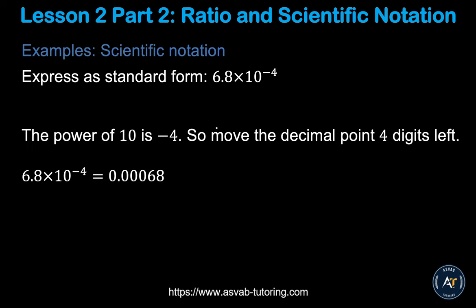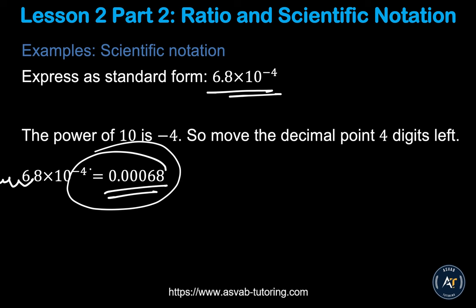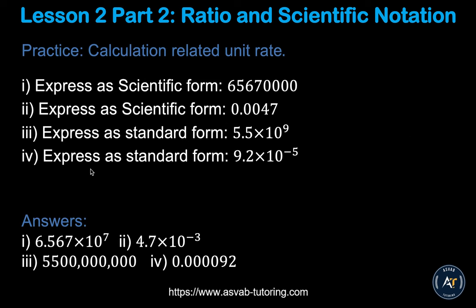Here's another example for you to try yourself. For 6.4 times 10 to the negative 4, move the decimal four places: one, two, three, four — then fill in with zeros to get the standard form. Pause the video and try the practice problems to make sure you understand.